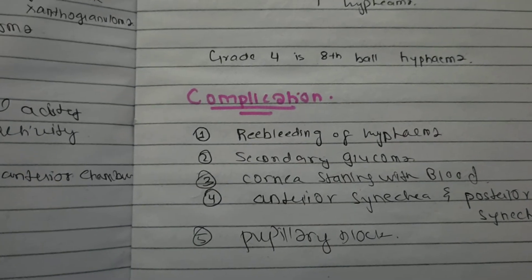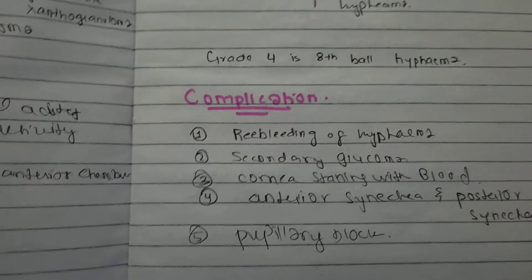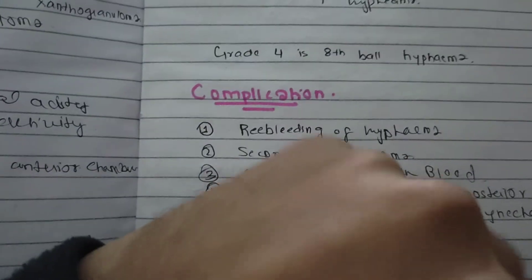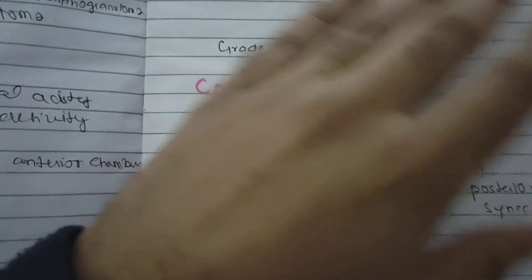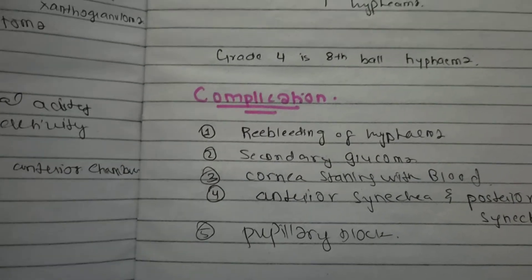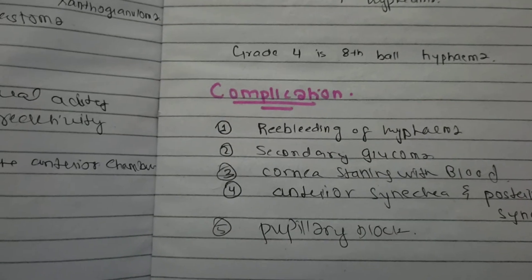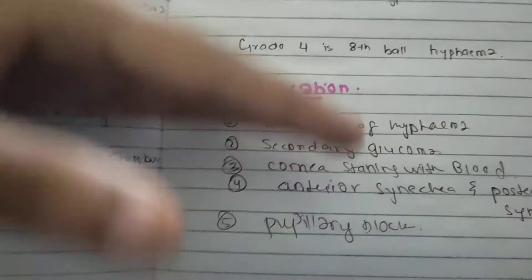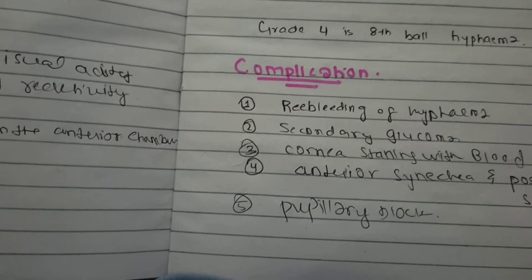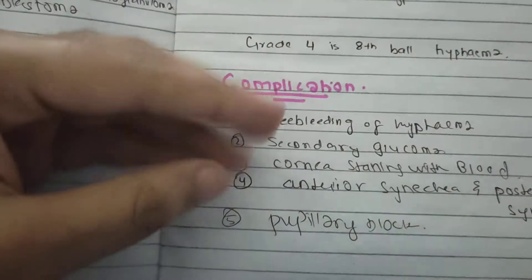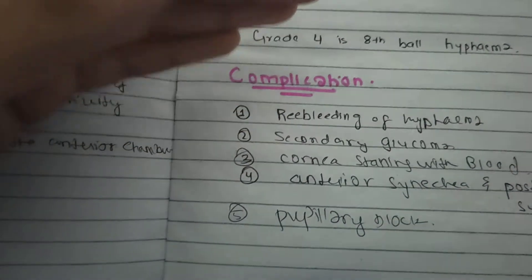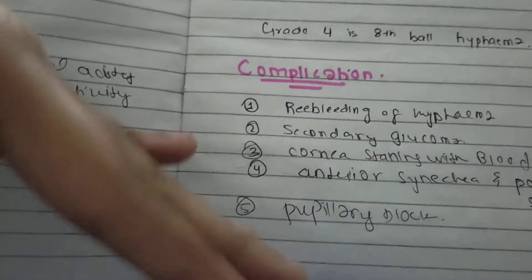After this, complications. When there is bleeding it forms a clot, but it can also lead to re-bleeding. Another complication is that when blood in the interior chamber comes into contact with the cornea, corneal staining can occur, and vision loss can also occur.